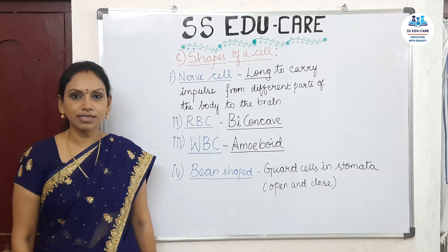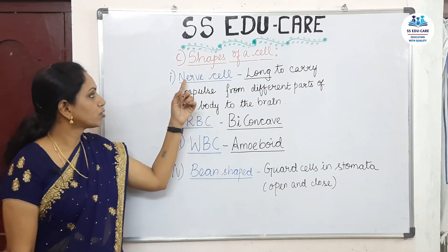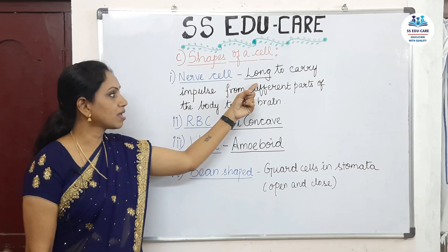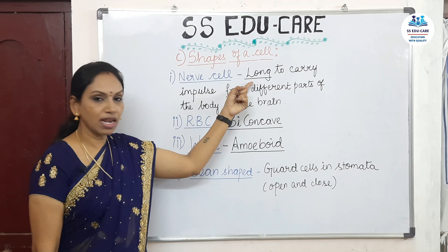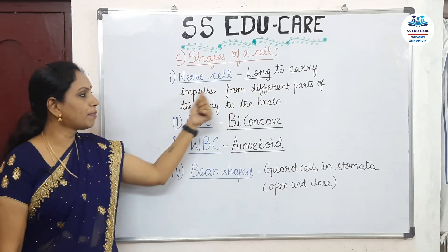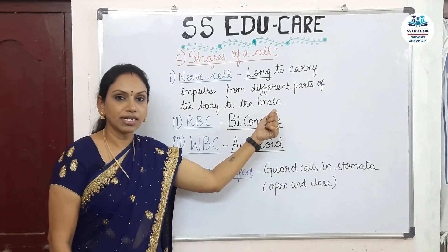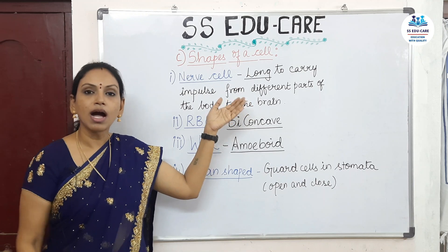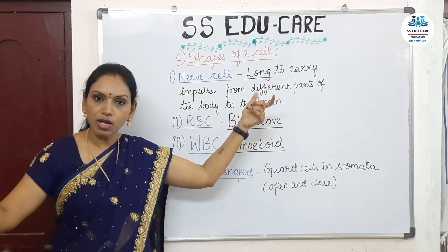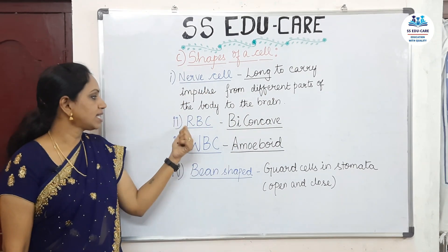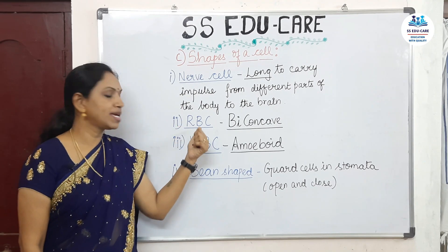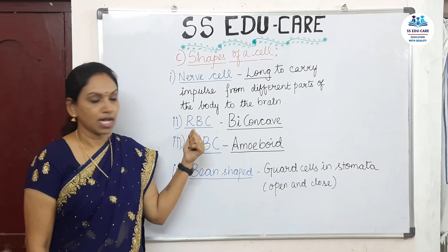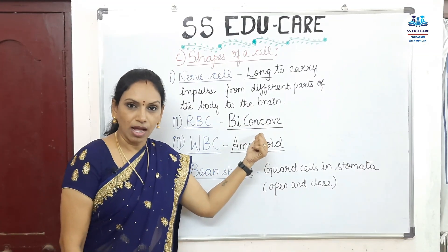The third category is based on the shape of the cell. First is the nerve cell, which is very long. Its elongated shape allows it to carry impulses from different parts of the body to the brain and back over very long distances. Second is the RBC — red blood cells — which are present in the blood.